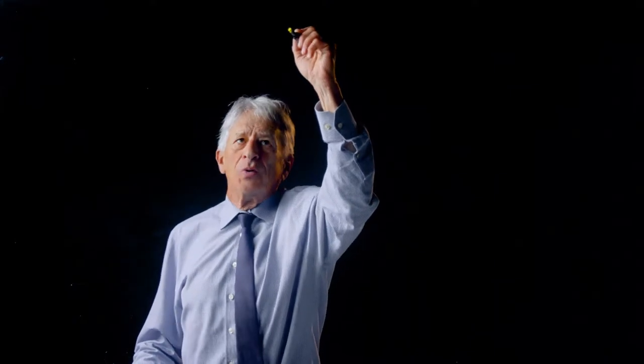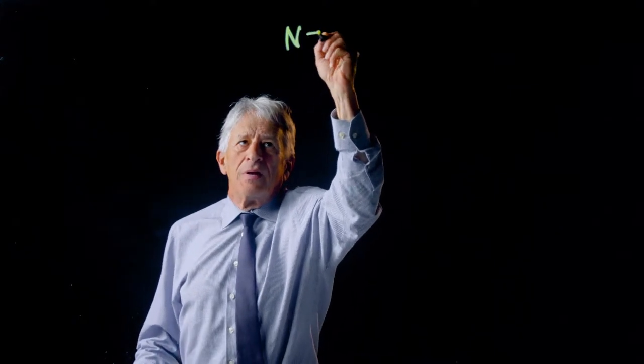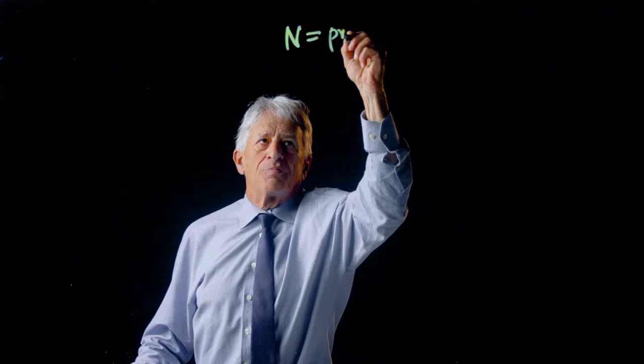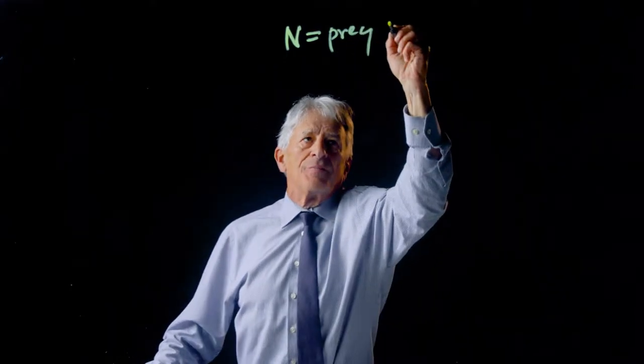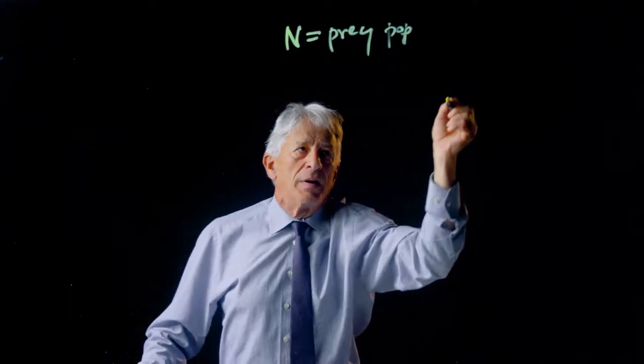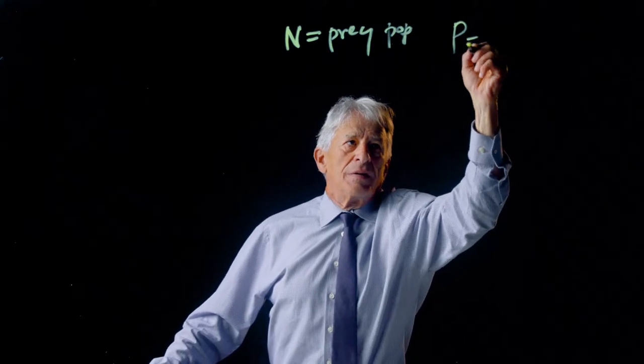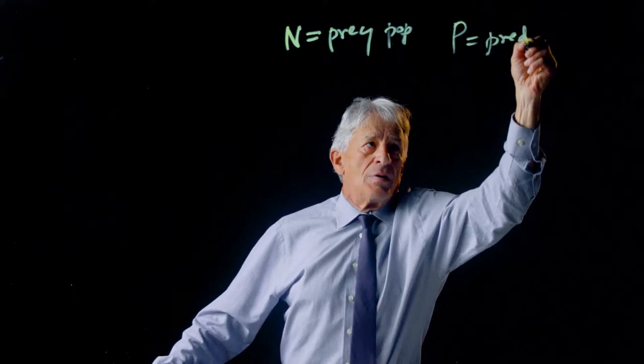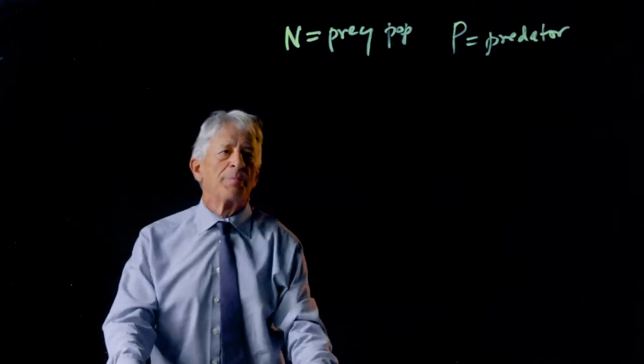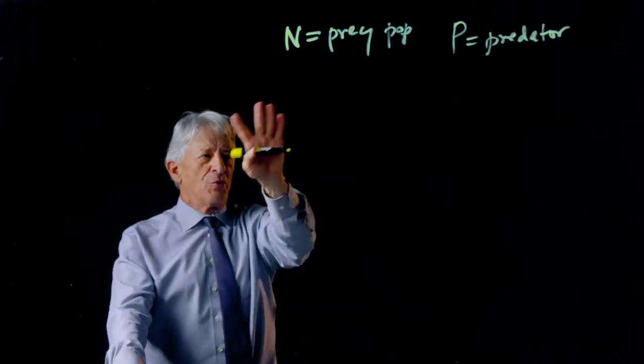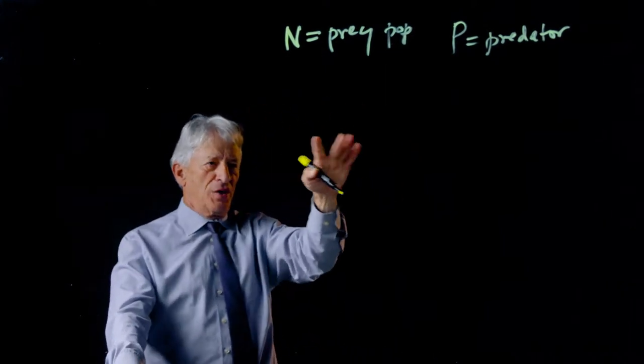Unfortunately, we're going to have to switch terminology from sharks and tuna to N equals the prey population and P equals the predator population.